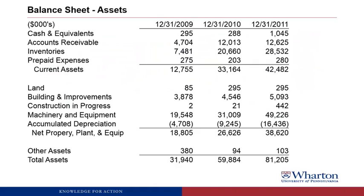Before we jump in and look at the ratios, I always think it's a good idea to go through the financial statements and take a look to see if there are any trends that sort of jump out at us or seem unusual that we should keep in the back of our mind as we go through the analysis. So here is the asset side of the balance sheet for Plainview. I recommend that you pause the video, take a minute to look over the balance sheet and see if there's anything that really jumps out at you, then resume and we'll talk about what you're seeing.